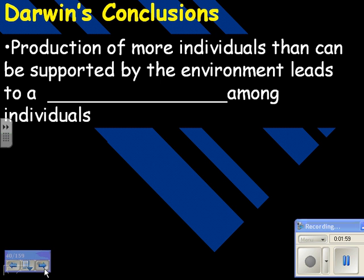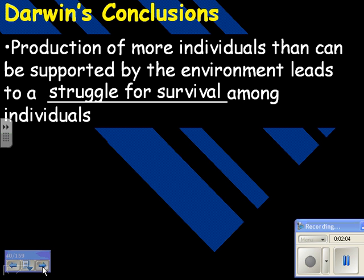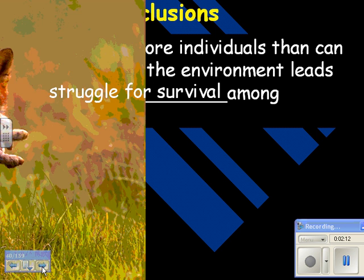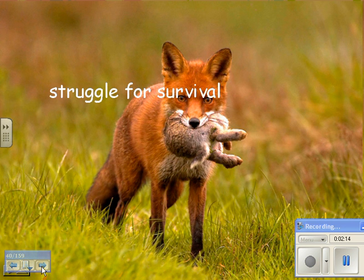Darwin's conclusions: the production of more individuals than can be supported by the environment leads to a struggle for survival among individuals. Some of the bunnies get the food and some of them don't — that's the overproduction. Here's the struggle for survival: some of them get eaten, or some of them don't get enough food.